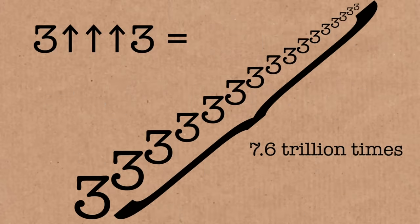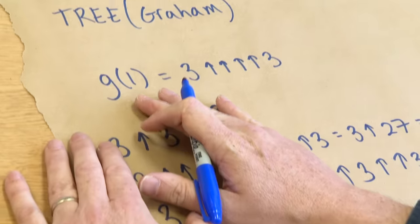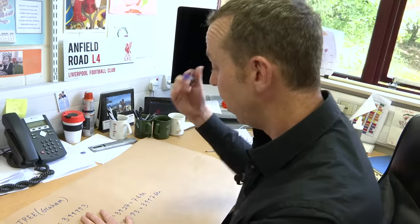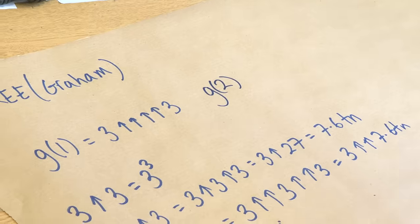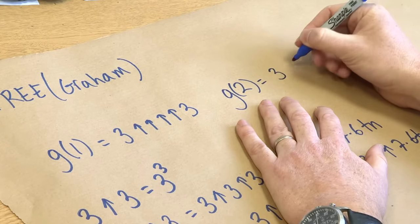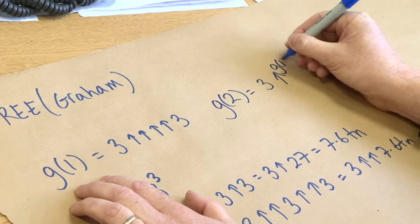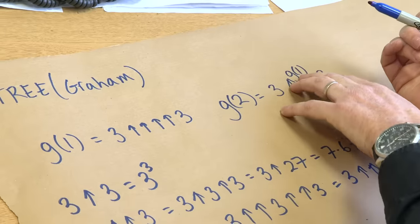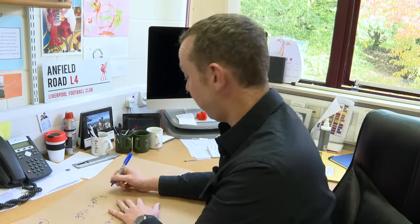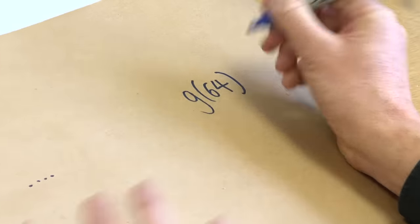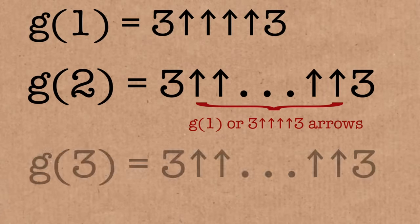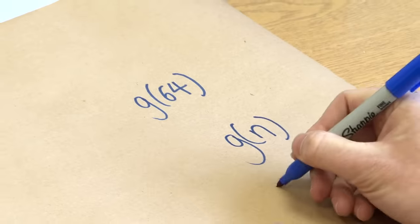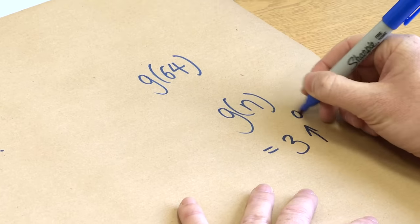These are just stupidly big numbers. The first rung on Graham's ladder, G1, actually has 4 arrows — a repetition of 3 arrows. Then Graham told us to build the sequence up: G2 has G1 arrows, and the arrows make numbers really, really big. So putting really big numbers as the number of arrows gives you crazy big results. He carried on with this sequence all the way to G64, which is Graham's number. This defines a sequence Gn, where each term uses the previous one as its number of arrows.